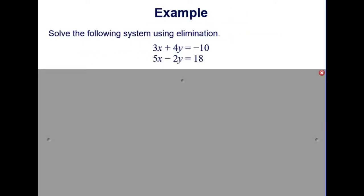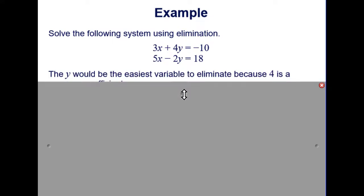Here's an example where this would apply. So it wants us to solve the system using elimination. But as the system is, I don't have the same or opposite coefficients. I have a 3x and 5x and a 4y and negative 2y. It's not easy to see which variable we'll eliminate. The y would be the easiest variable to eliminate, though, because 4 is a common coefficient.